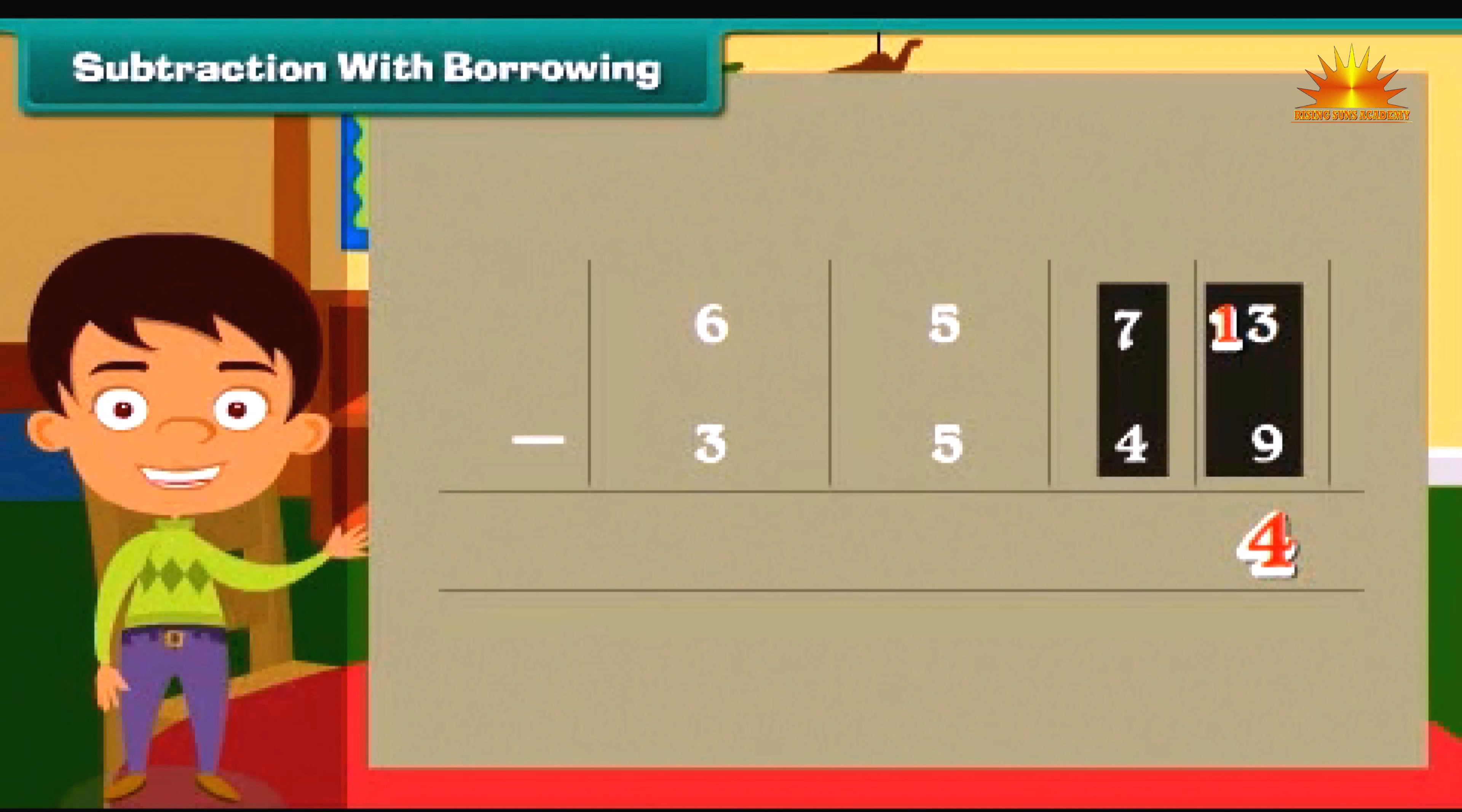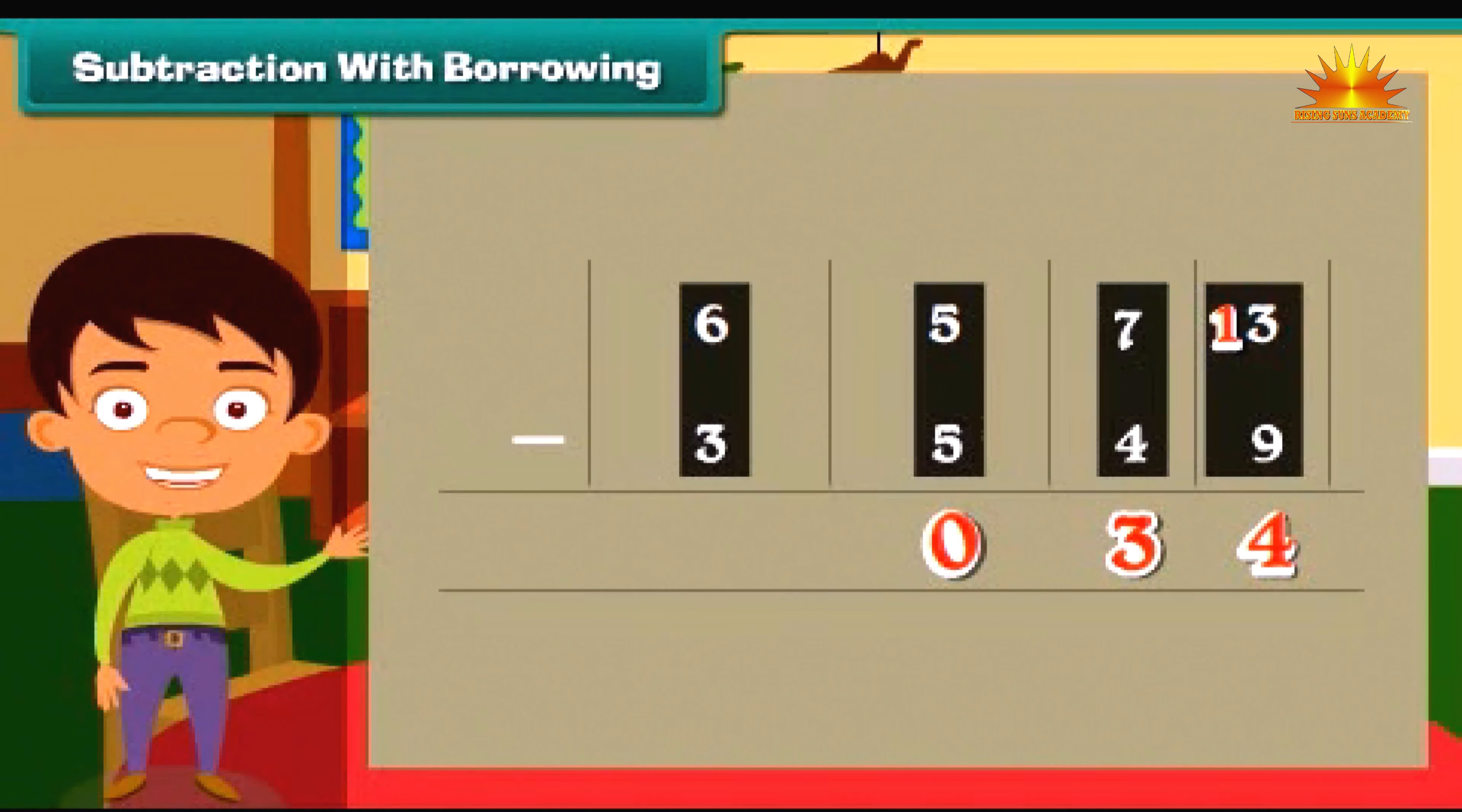Similarly, we now subtract hundreds. Five minus five is zero. Subtract thousands. Six minus three is equal to three. So 6583 minus 3549 is equal to 3034.